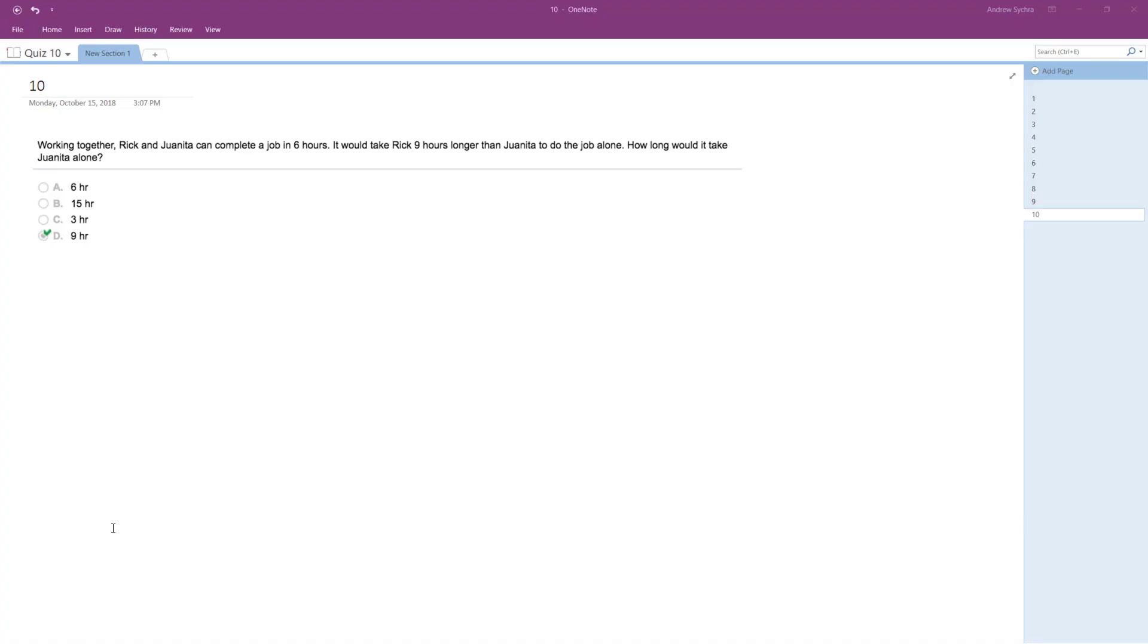All right, so working together, Rick and Juanita can complete a job in six hours. It would take Rick nine hours longer than Juanita to do the job alone. So how long would it take?